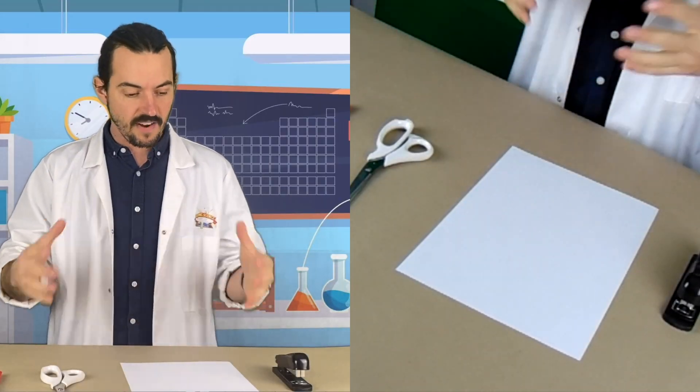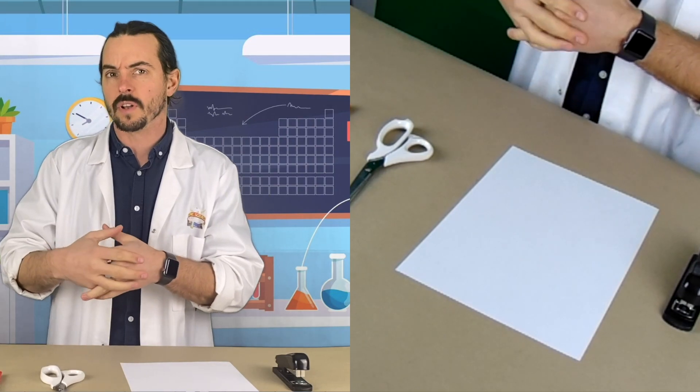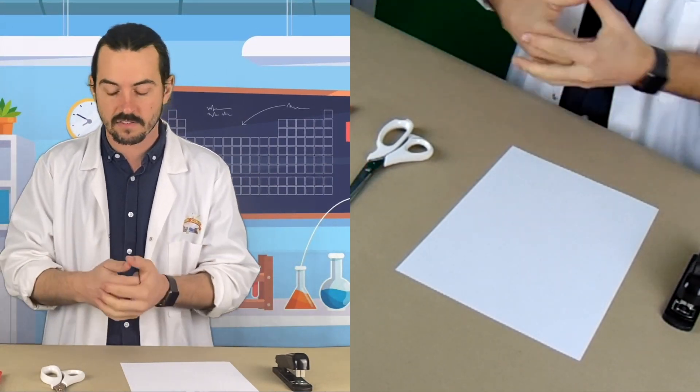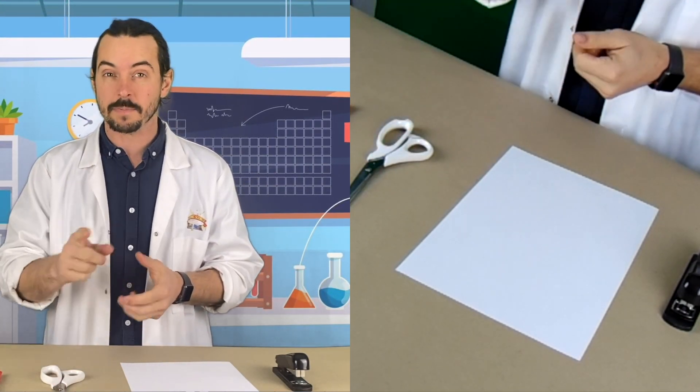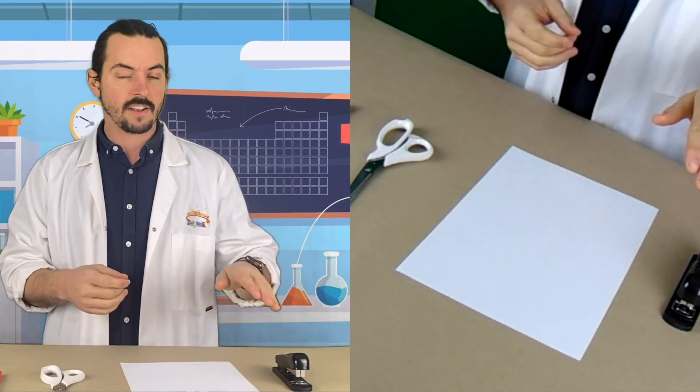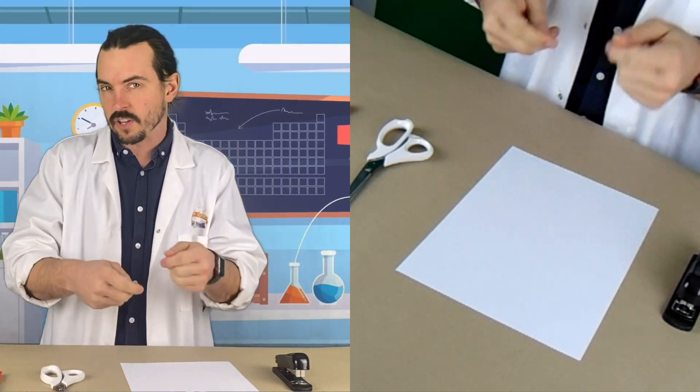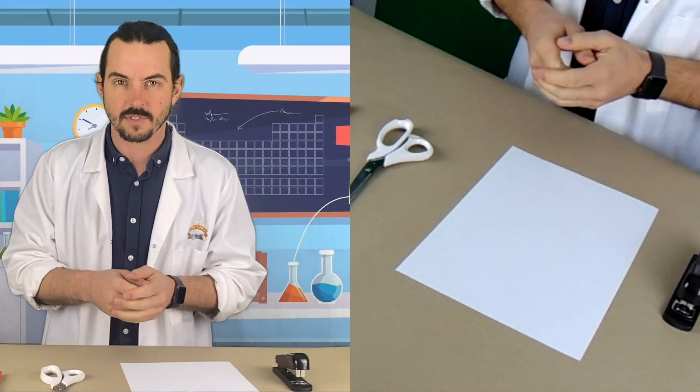So the equipment for this is very simple. We need a pen. You might also want a pencil or coloring pencils. Some scissors—please be very careful with those. One piece of paper, and it would probably be best to use glue, but rather than taking the time for the glue to dry, I'm just going to use a stapler.